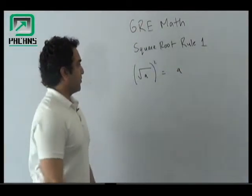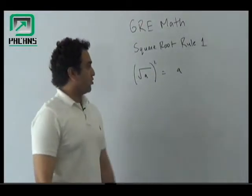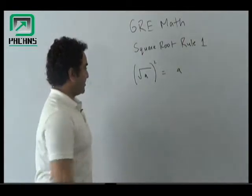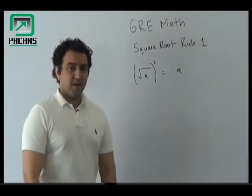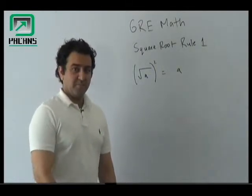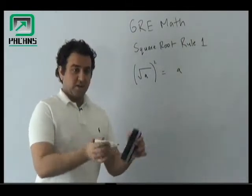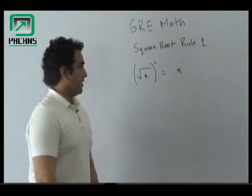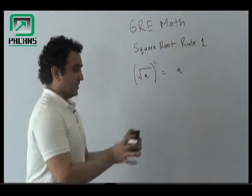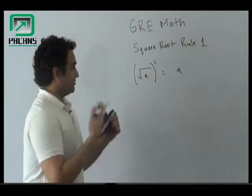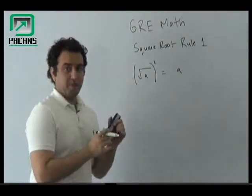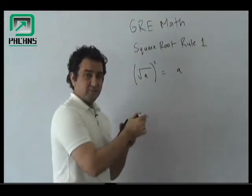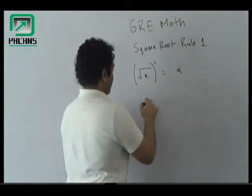Hello everyone, welcome. Rule number one: if you have something like √a and it is squared, the answer would be a. So let's work with an example.